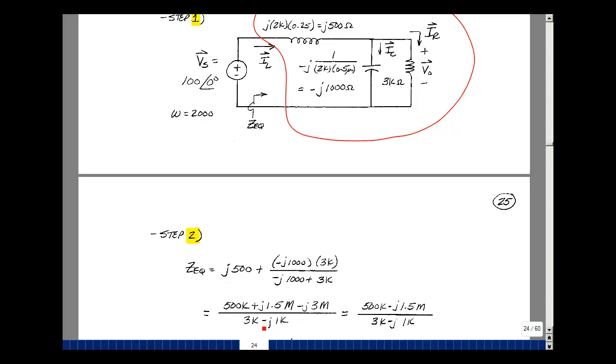And then I'll find a common denominator of the same value. So I'll multiply this times j 500. So I'll get a j squared with a minus sign. So I'll cancel. I'll get 500K. And then 3K times j 500 is j 1.5 million.